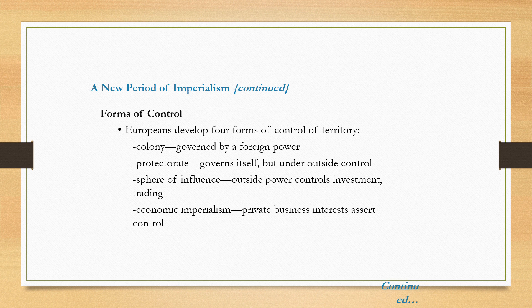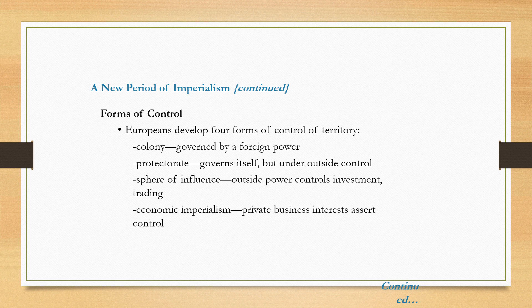European colonial powers had four basic forms of control over their territory. One is the most strict — a strict colony, like the colony of New Jersey, which was a royal colony directly controlled by the British crown. Another form is a protectorate. For example, Cuba in 1898 became a protectorate of the United States, meaning Cuba had a degree of independence, but had to accept no money from any other country, allowed a U.S. military base, and could make no formal alliances with any other country.